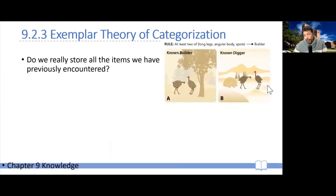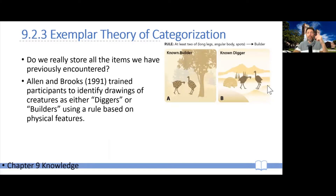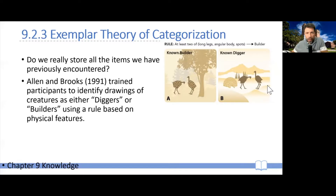Is there any evidence that this is actually what we do? A wonderful experimental example is Allen and Brooks in 1991. They did an experiment very similar to the random dot pattern experiment. They trained participants to recognize creatures — whether they were in one of two categories: builders or diggers.